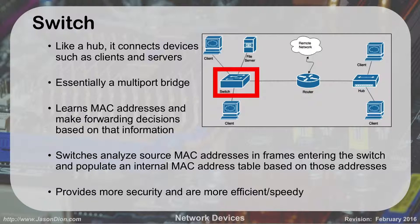Think of an old telephone operator taking plugs and switching people between connections — that's what a switch is doing electronically. Sarah and Joe get their own little talking network. At the same time, Dave and Charles can talk separately. We can have two or three conversations going at once, whereas with hubs, everyone had to wait until one conversation was done. Switches do this based on the MAC address — a unique hardware identifier for your network card. This provides more security and efficiency for speedy network access.